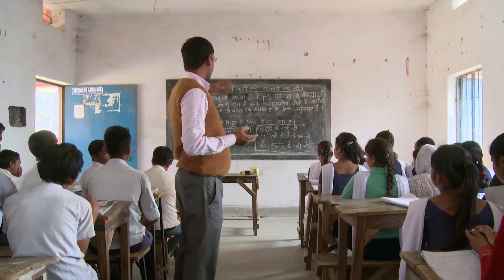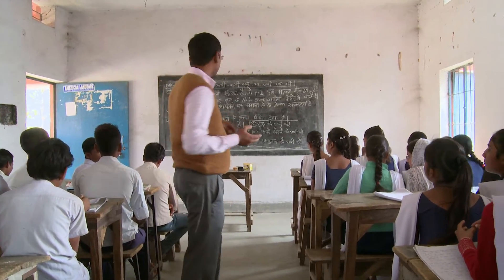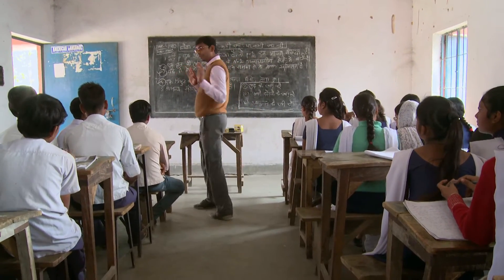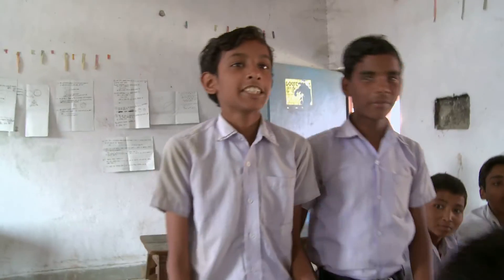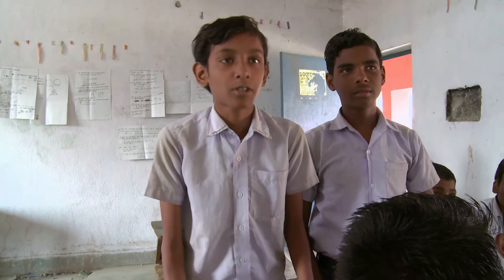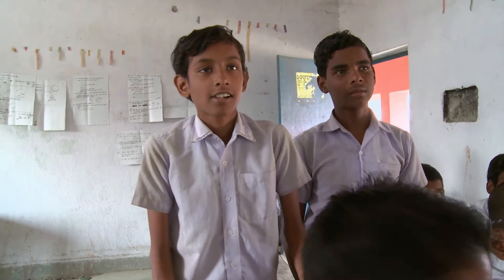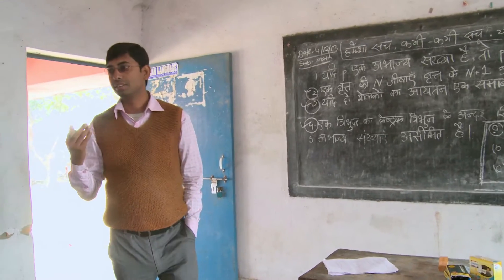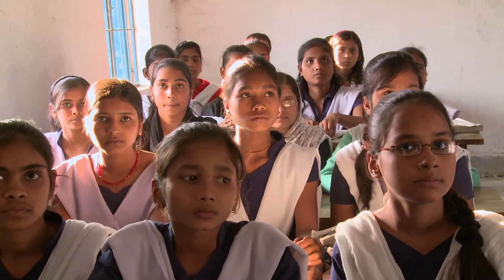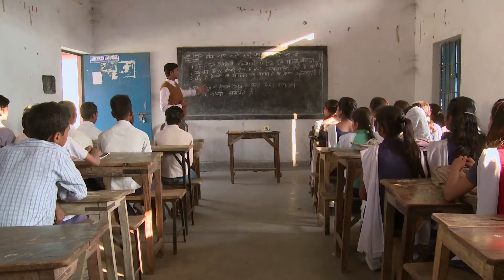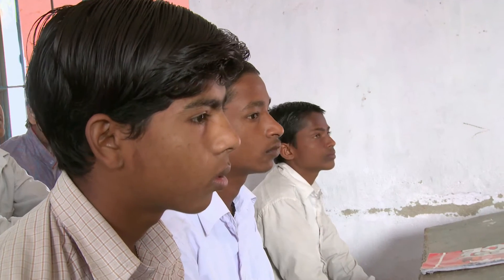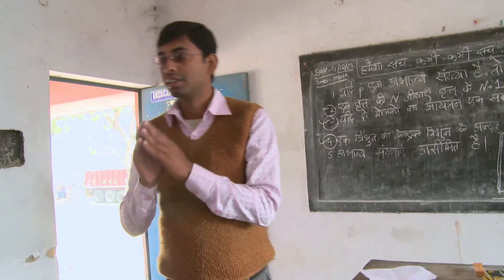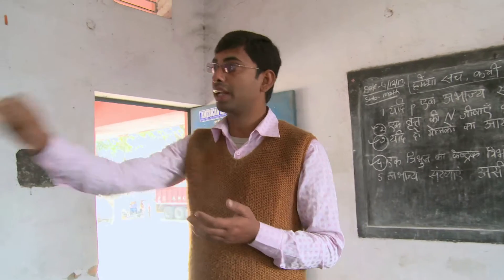The teacher asked students to raise their hands if they were satisfied with one another's arguments. In the final part of the lesson, the teacher wants his students to imagine they are arguing with a famous Indian mathematician, Ramanujan. They therefore need to try even harder to make their arguments convincing. The teacher invites a pair to present their exchange.